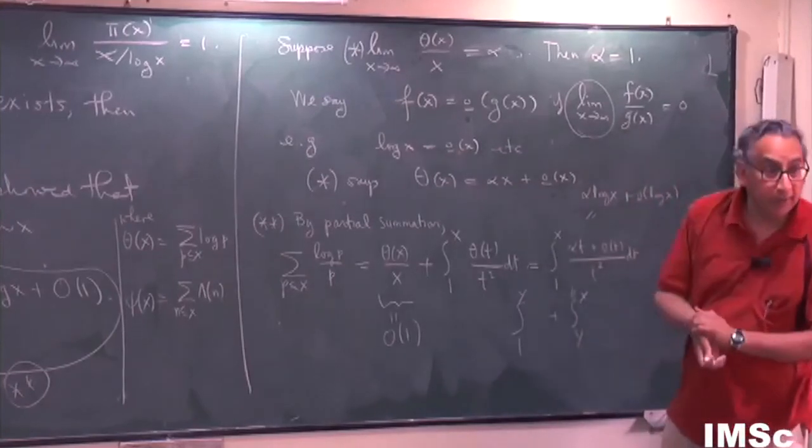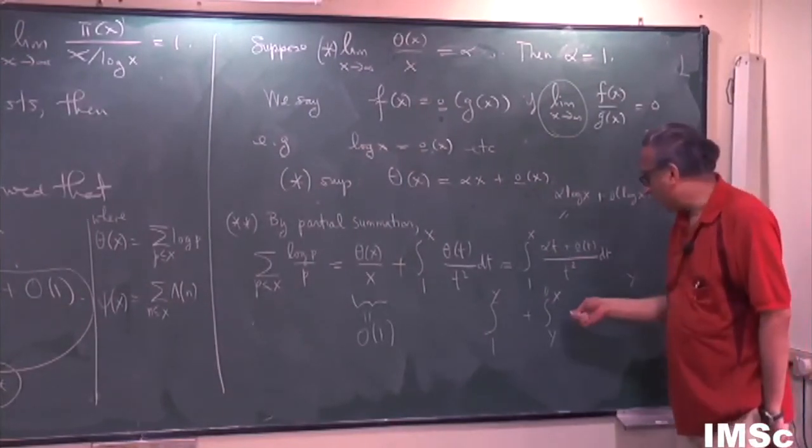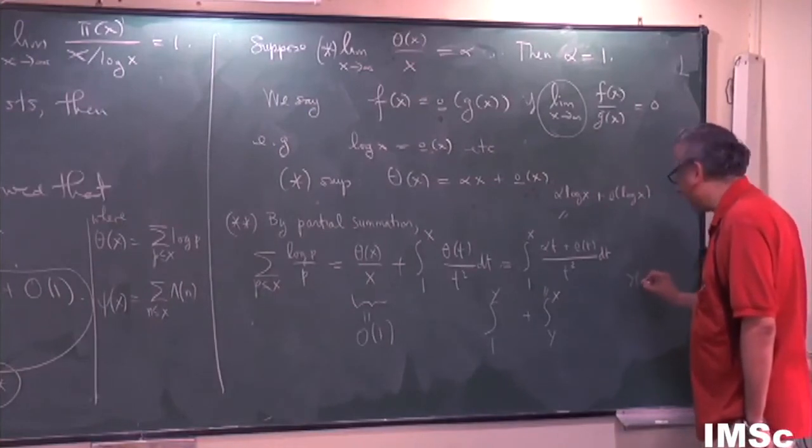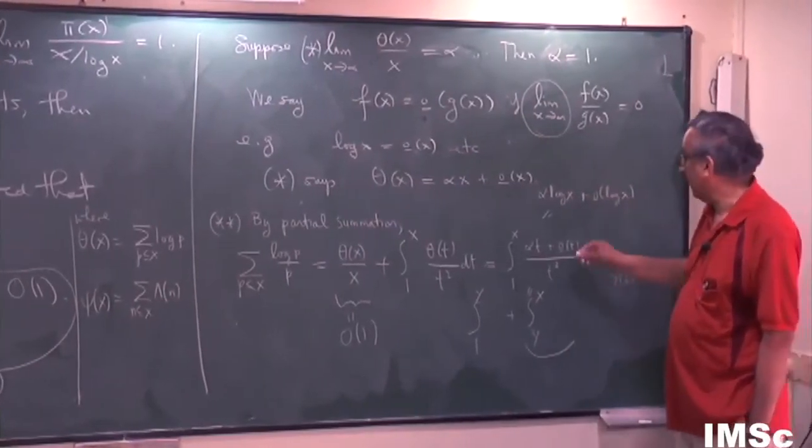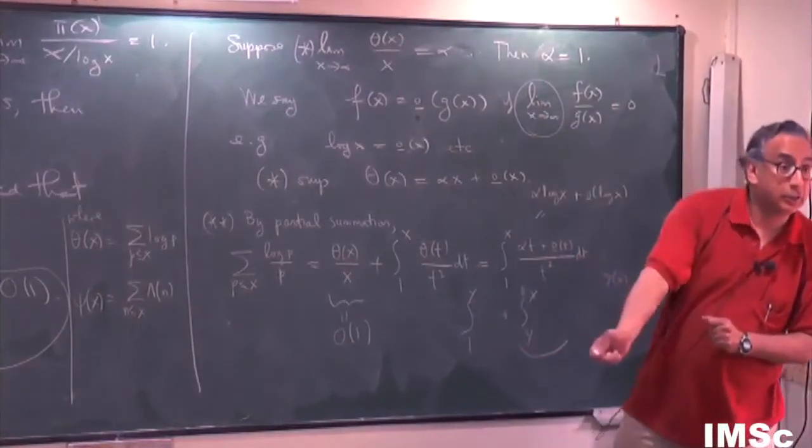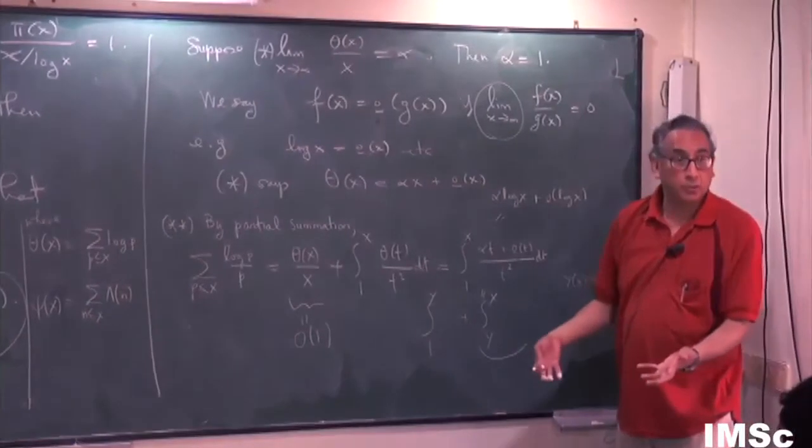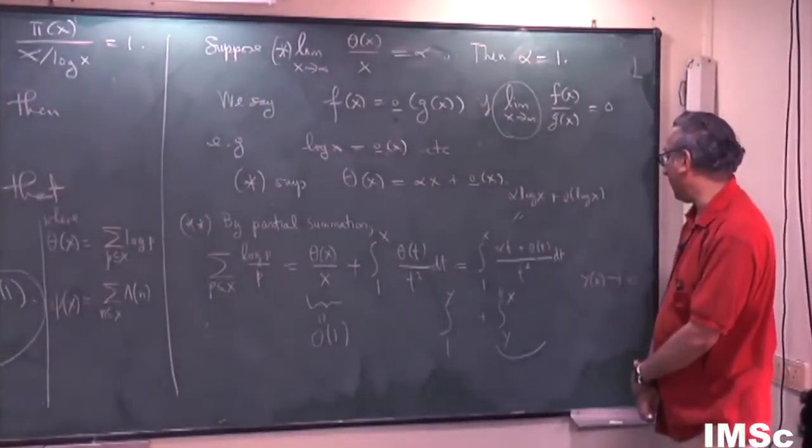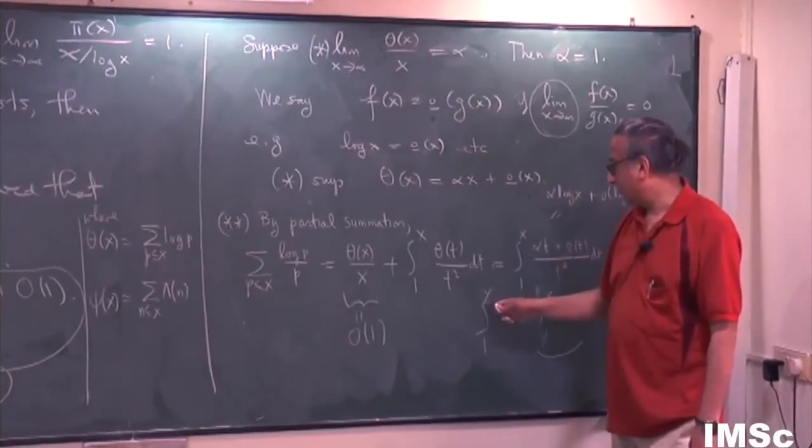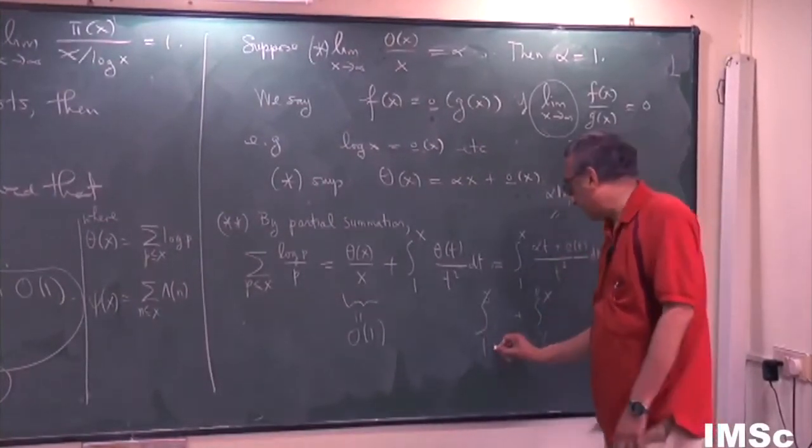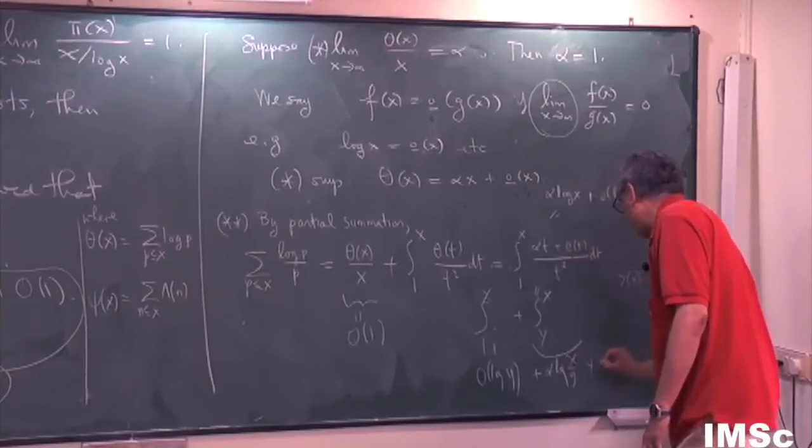But this really should be split up into 1 to y and then y to x. And I'm going to leave it to you to do at home. And y is what? Y is going to be some parameter to be chosen later. And so y is going to be a certain function of x, which will tend to infinity. So on this part of the integral, you can use this little trick because the little o of t is okay as long as t is going to infinity and all the arguments are going to infinity here. But on the initial part, you have to use some sort of brute estimate, crude estimates and get away with that. And there you would use the fact that θ(t) is o of t and therefore it's o of t over t squared, but then you're going to get o of log y. So this will give you something like o of log y and this will give you α log x over y plus something small.